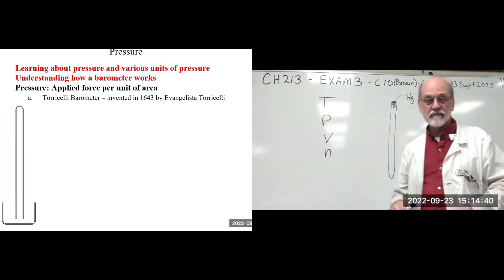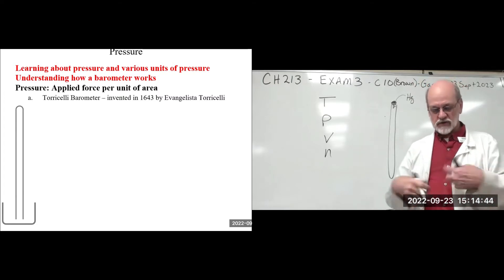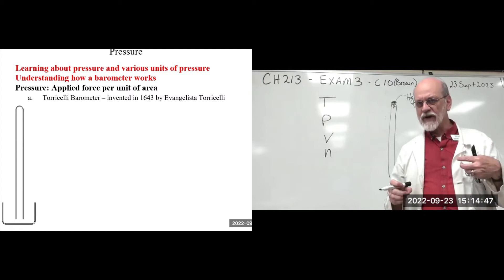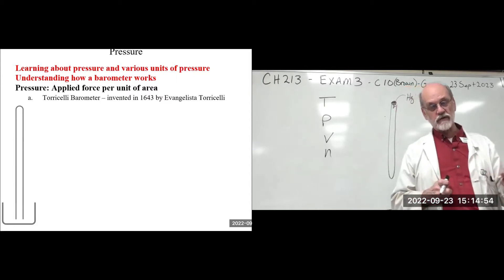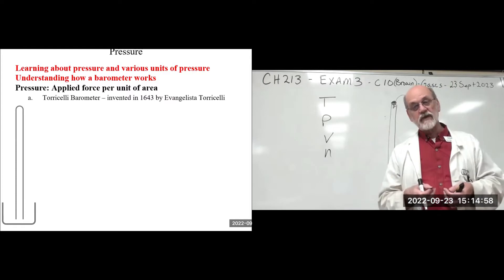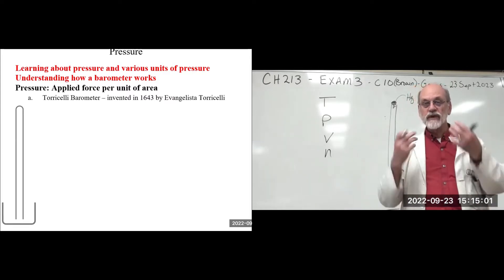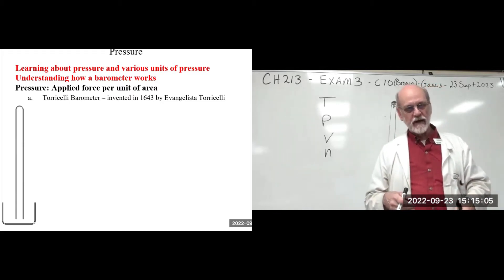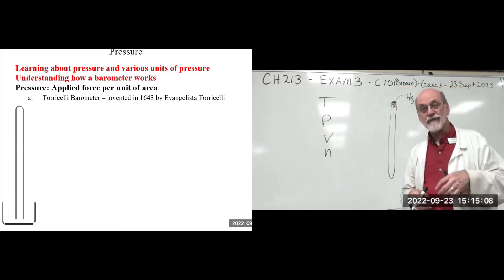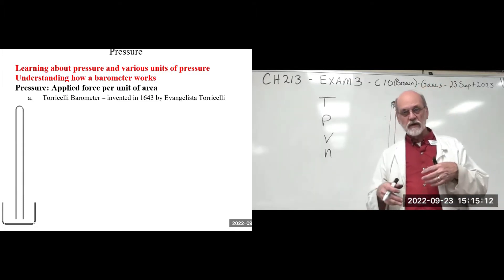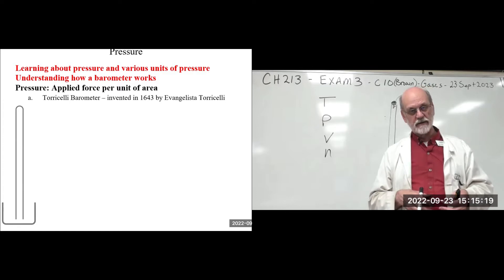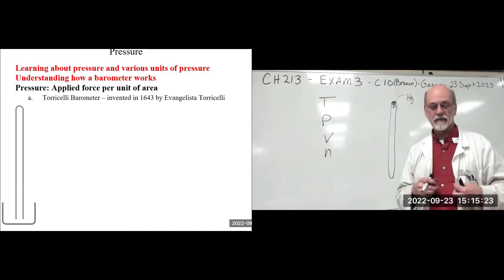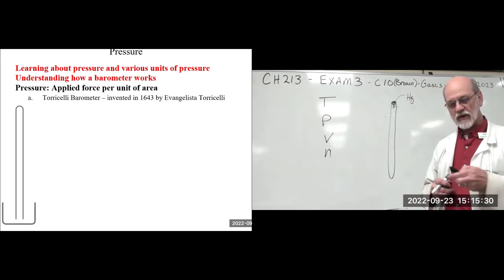Mercury metal is not particularly hazardous by itself — you can shake it off your hands easily. The problem arises under two conditions: if mercury is vaporized and mercury atoms are inhaled, they stay and can cause damage; and through microbial action converting mercury into organic forms. Dimethyl mercury is extremely toxic — just a tiny amount will destroy your nervous system.